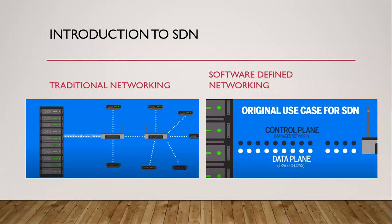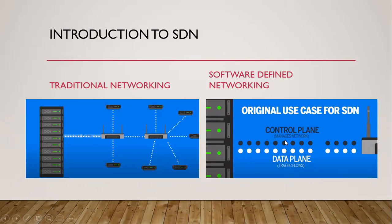Now let's look at the introduction to SDN. The difference between traditional networking and software defined networking is that traditional networking uses integrated hardware and software to direct traffic across a series of routers and switches. The original use case for SDN is to virtualize the network by separating the control plane that manages the network from the data plane where traffic flows. So in traditional networking both are together, but in SDN we have a different device for the control plane and different for the data plane.